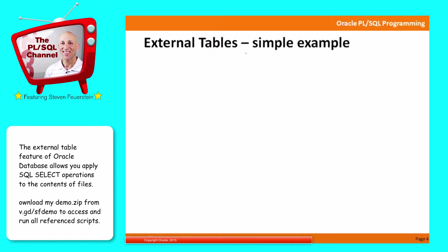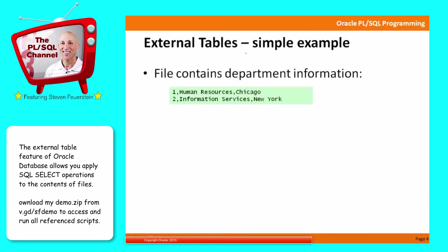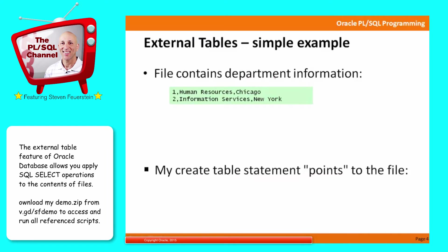Let's start off with a simple example. My file contains department information: human resources, information services — notice the department ID, the name of the department, and the location of the department. So that's my control file of data.